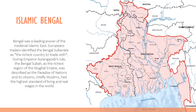With some certainty, we could claim that Bengal was a leading power of the medieval Islamic East, and the Bengal Sultanate was the richest country to trade with, according to European traders. Further, during the rule of the Mughal Empire, the Bengal Subah was the richest region of the Mughal Empire. It is obvious that the richest country of the world should have significant architecture to explore, and that is why we will dedicate several of our next lectures to explore the beauty and significance of their architecture.